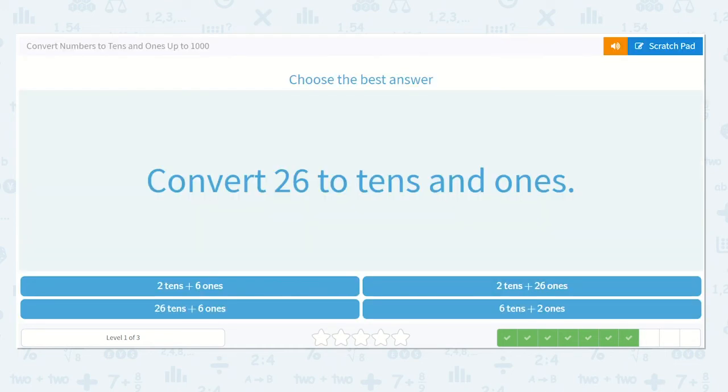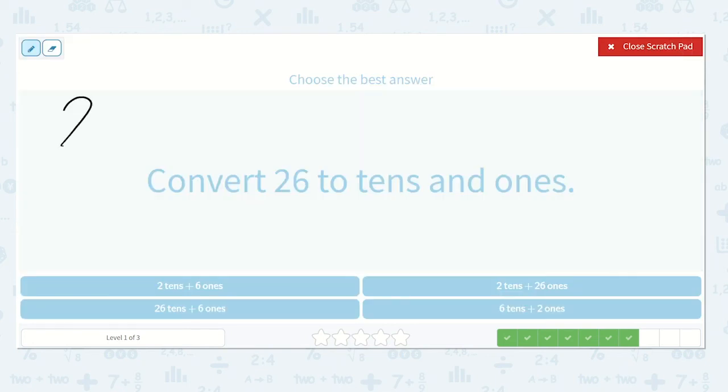Alright, let's convert twenty-six to tens and ones. Twenty-six. Well, I have a two in my tens place and a six in my ones place. So I don't even need to draw a picture.